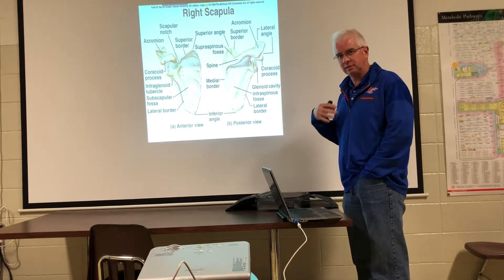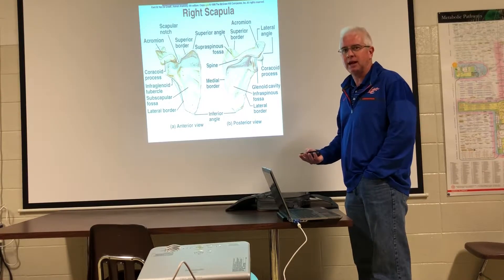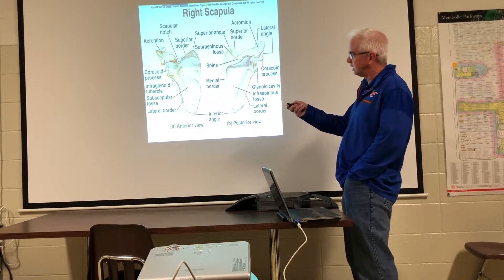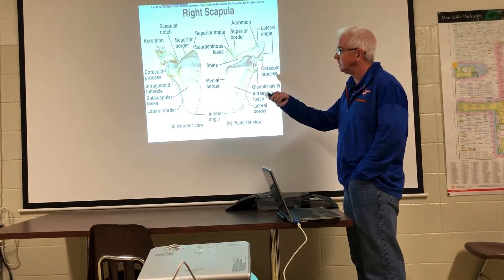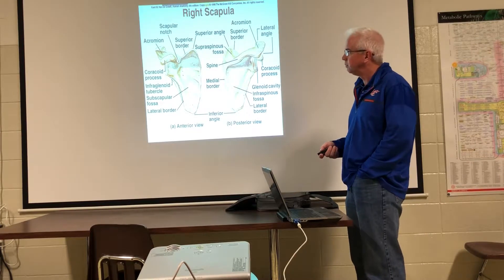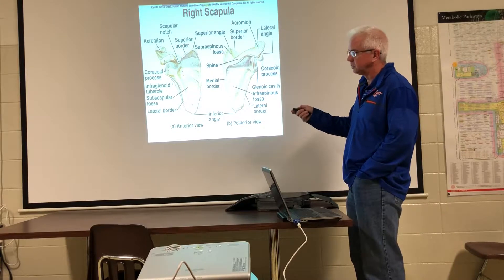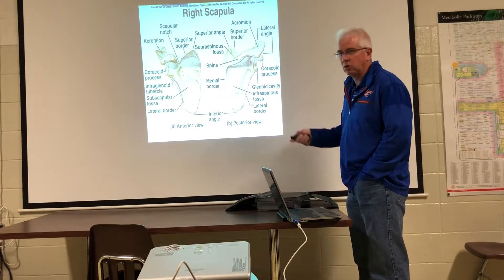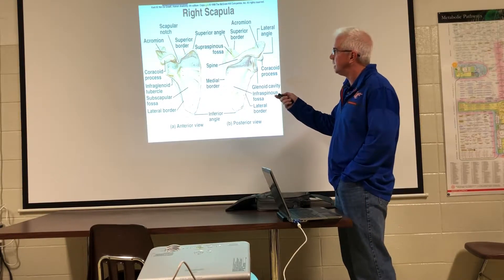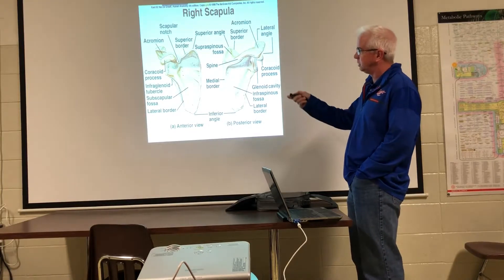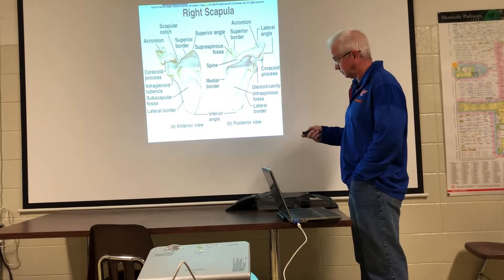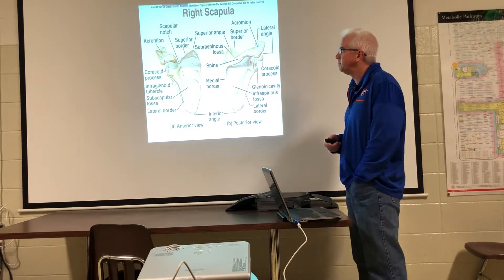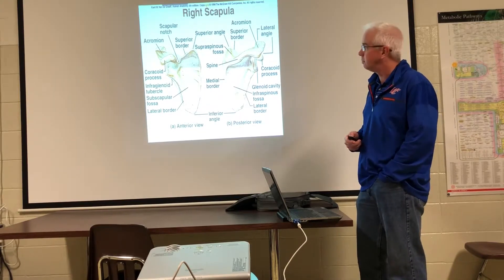The coracoid process is the piece of the scapula on the front, and an important ligament attaches there — the coracoclavicular ligament, named for its attachment points. We're going to put some important muscles there too: the short head of the bicep, the coracobrachialis, pectoralis minor — they all attach to this. The subscapular fossa is on the front. The lateral and medial borders have all kinds of important things. The glenoid cavity is the articulation for the head of the humerus. The supraspinous fossa, the spine, and the infraspinous fossa will all become very important as we construct the shoulder region.